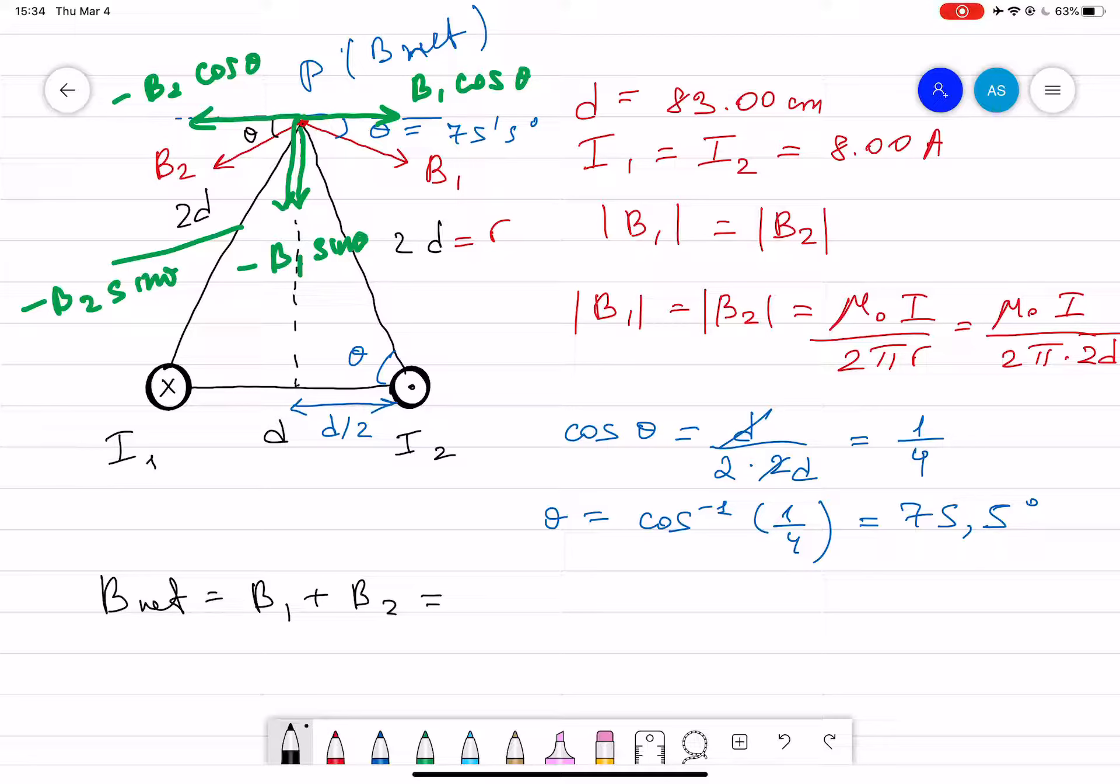Let's sum all of them, which means will be B1 cosine theta minus B1 sine theta minus, now since we said that B1 is equal to B2 in terms of magnitude, so I can replace B2 by B1. B1 cosine theta minus B1 sine theta. As you can see here, B1 cosine theta negative and the positive B1 cosine theta will cancel each other because they're pointing opposite and same in magnitude. The only thing that is left here will be B_net equals minus 2 B1 sine theta.